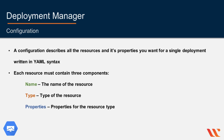Each resource must contain three components: name, which is the user-defined string to identify the resource such as 'my VM', 'project data disk', or 'test network'; type, which is the type of resource being deployed such as compute.v1.instance; and properties, which are the parameters for that specific resource type.